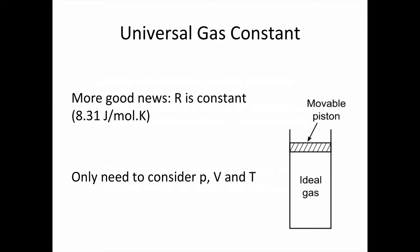More good news, r is also constant. It's always constant, which is why it's called universal. Its value is 8.31 joules per mole Kelvin.